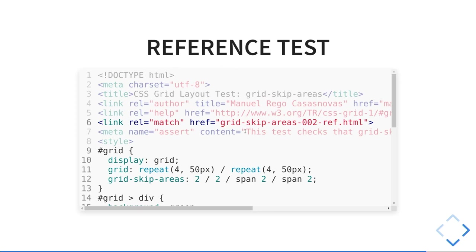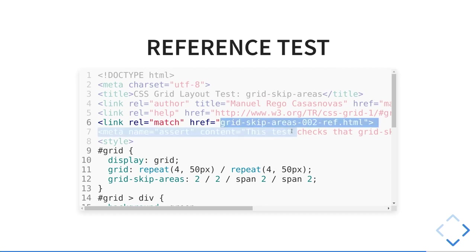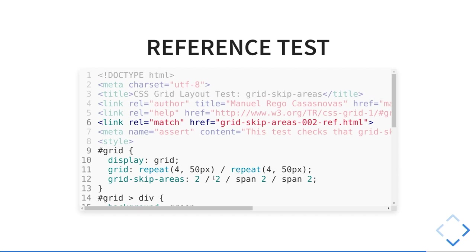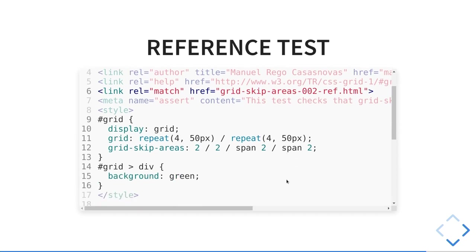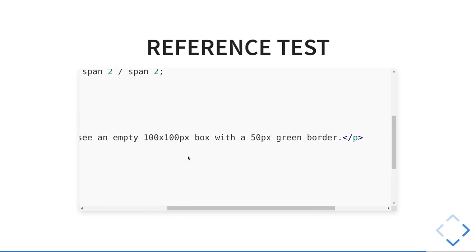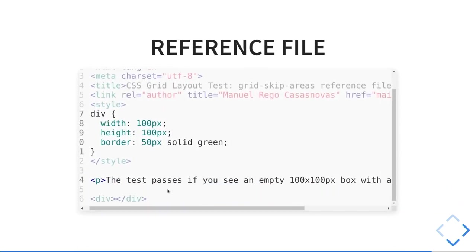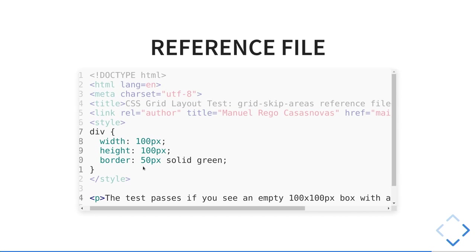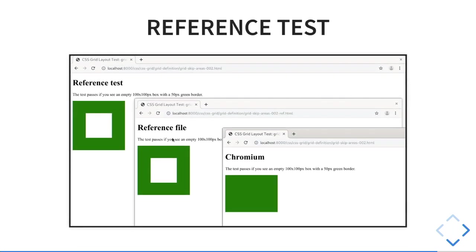So you also need reference tests that basically compare two different HTML files — they take a screenshot and compare the screenshots. You tell: this test is going to render exactly the same as this reference file. In this test we have a 4-by-4 grid and we are skipping a square in the middle. The reference file is just a simple div with 100 pixels height, 100 pixels with 50-pixel green border. When we run it — this is the reference file, this is Chromium with the patches built, and it's working fine. And this is Chromium without the patches — not working fine, you're not seeing the gap in the middle.